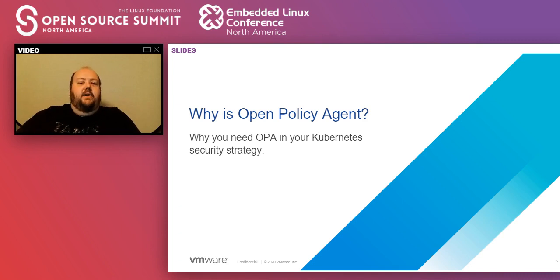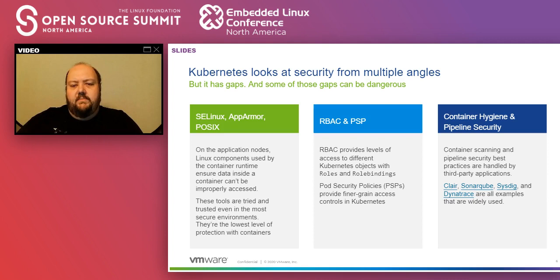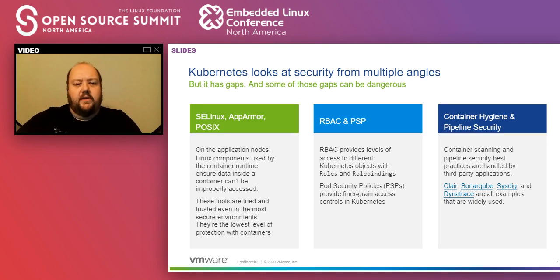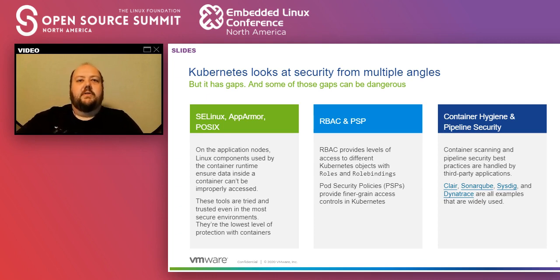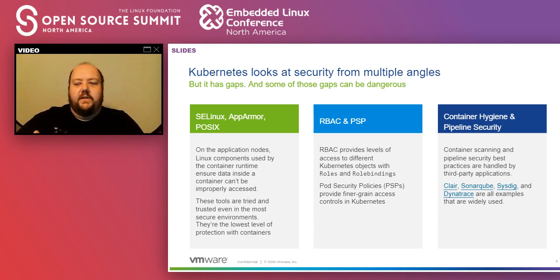So why is Open Policy Agent - why you need OPA in your Kubernetes security strategy? Security starts all the way down at the bottom of the operating system, inside the Linux kernel, and that's where the Kubernetes security posture begins as well. Kubernetes uses things like SELinux and POSIX - which is how file systems are created and handled inside Linux - to make sure data from one container managed by Kubernetes is not able to jump and be accessed by another container that doesn't have proper permissions. This has been tried and true since the 90s with SELinux and is securing some of the most sensitive data on the planet.